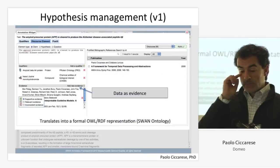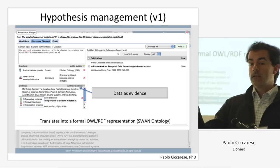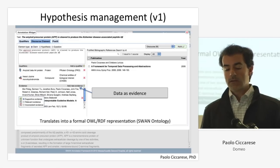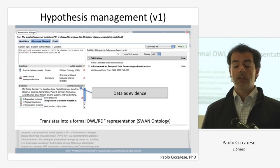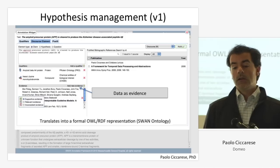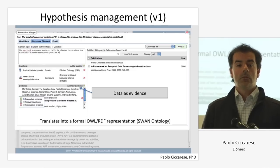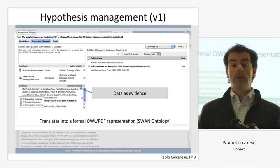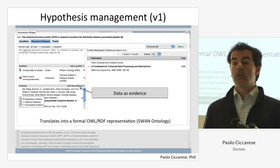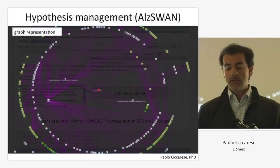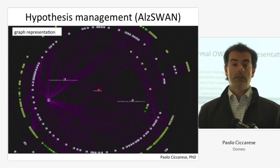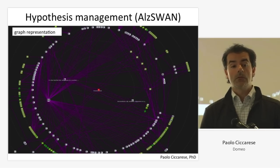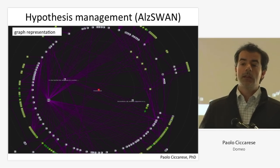Another similar plugin is for hypothesis management, where you can highlight sections of an article and say this is a claim. You can attach evidence by searching in PubMed and linking to articles, attach tags to entities involved in that claim, and attach links to data. Evidence — whether data or articles — can be supportive or negative, because we have to keep track of that. We work with pharmaceuticals, and failed experiments are very important for saving money.